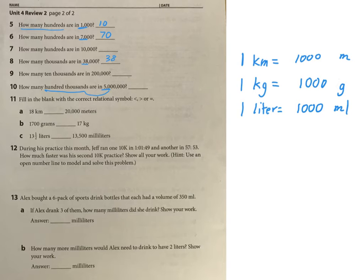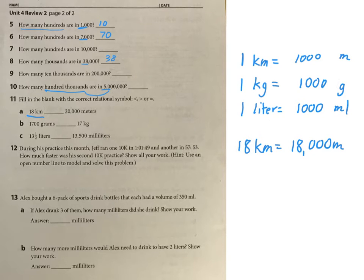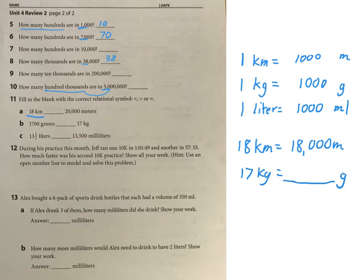So we have 18 kilometers here — 18 kilometers is going to be 18,000 meters, and then you can use that to compare those two numbers. You're going to have a similar thing for grams: 17 kilograms — how many grams is that? And then down here, 13.5 liters — how many milliliters would that be? That's going to help you compare.